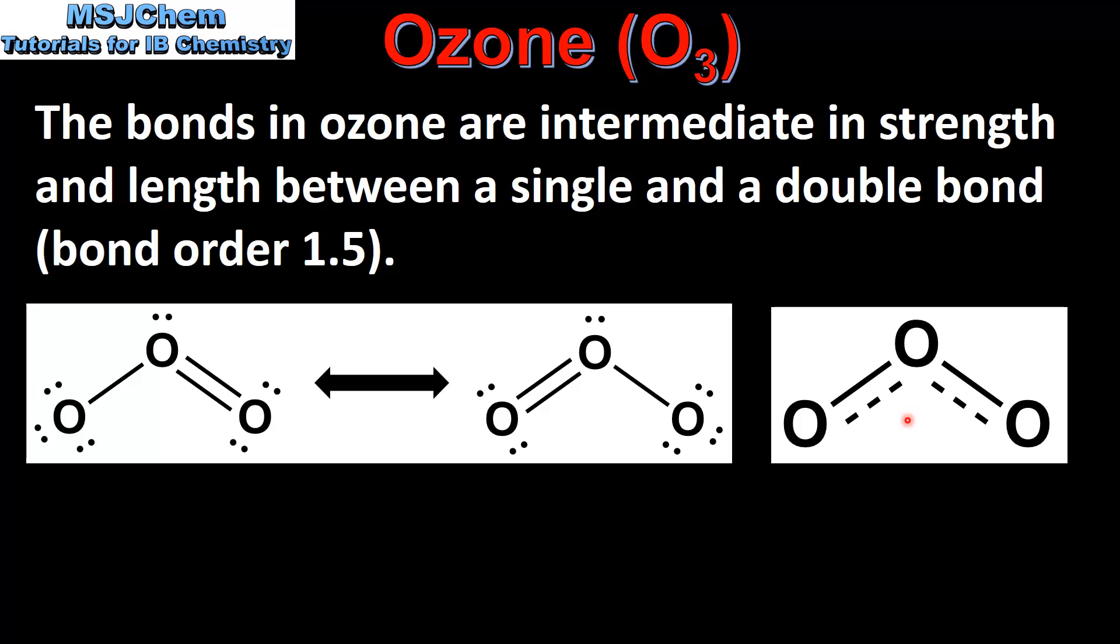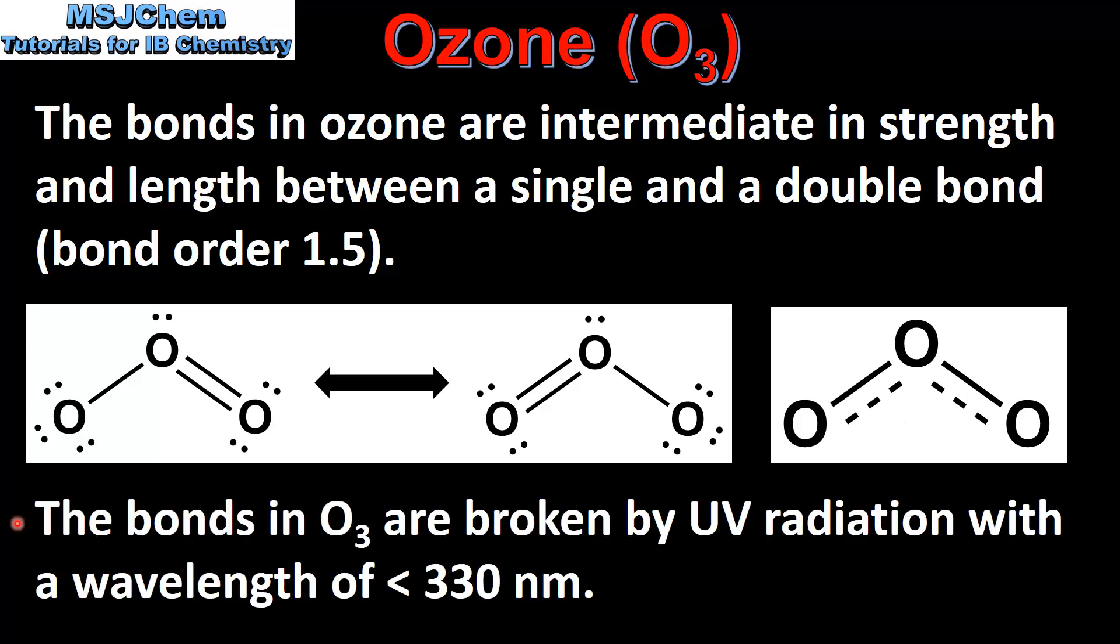In terms of strength they are stronger than a single bond but weaker than a double bond. In terms of length they are shorter than a single bond but longer than a double bond. These bonds between the oxygen atoms in ozone are broken by UV radiation with a wavelength of less than 330 nm.